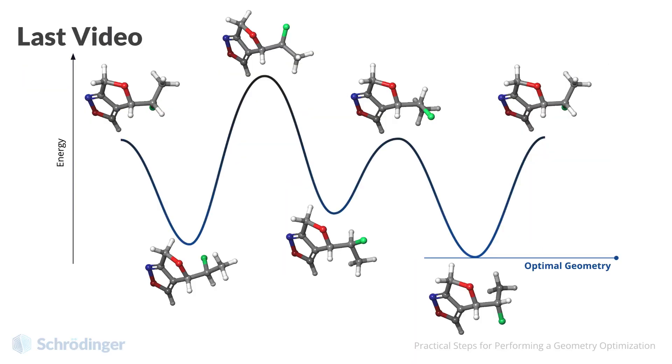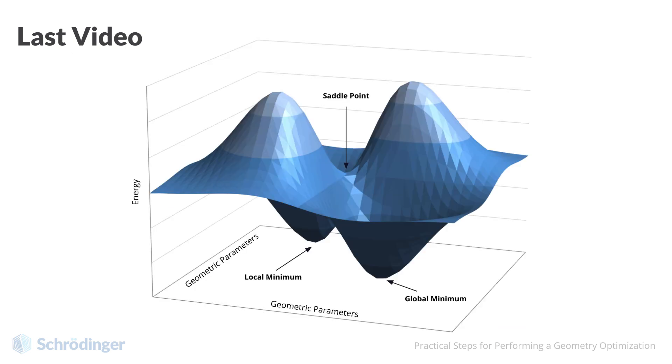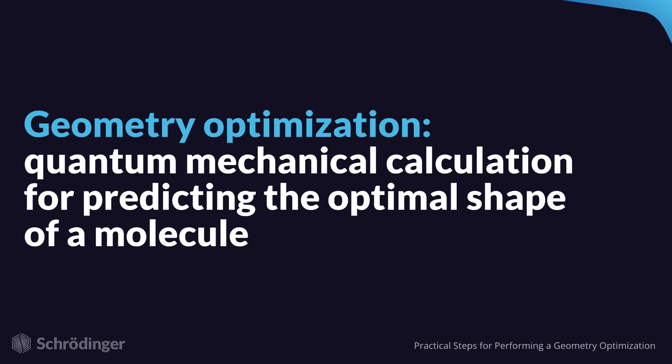In the last video, we discussed the fundamental problem of determining the shape of a molecule. We looked at various potential energy surfaces and discussed concepts of local versus global minima, as well as saddle points. In this video, we will discuss the practical steps of geometry optimization.